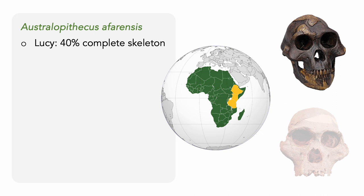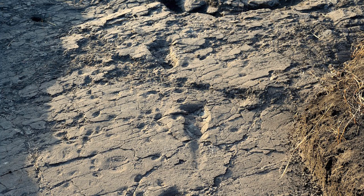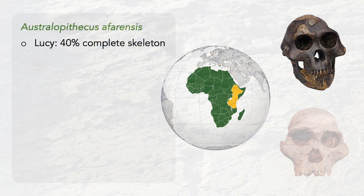Like other early hominins, Lucy had many ape-like traits, including a flat nose, protruding jaw, and relatively small brain. But like humans, Lucy had small canines, she mostly ate fruits, and we also know that she regularly walked upright on two feet — habitual bipedal locomotion. There's evidence for this in the form of trace fossils: the Laetoli footprints, a perfectly preserved 3.6 million year old 88-foot walking trail left in wet volcanic ash.